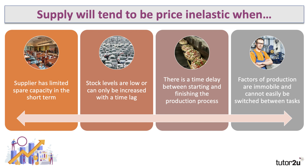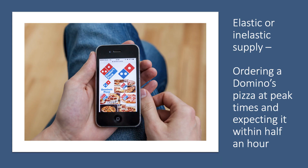Housing is a good example; agricultural products clearly fit into that category too, although increasingly technological advance is perhaps shortening production time periods. Supply also tends to be price inelastic when factors of production, including labour, are occupationally immobile and cannot easily or quickly be switched between different tasks.